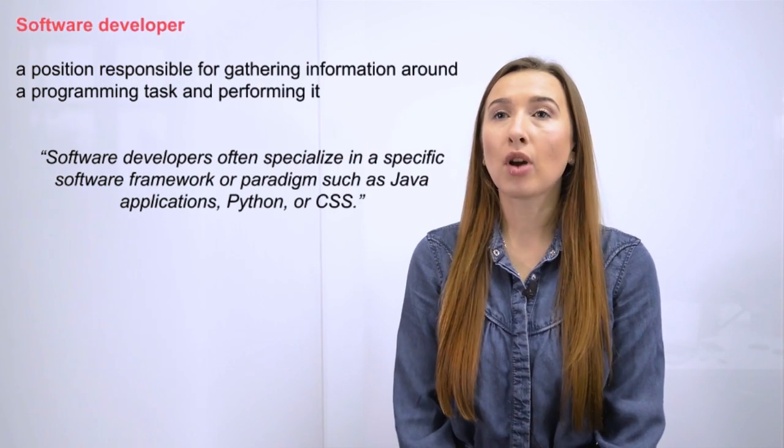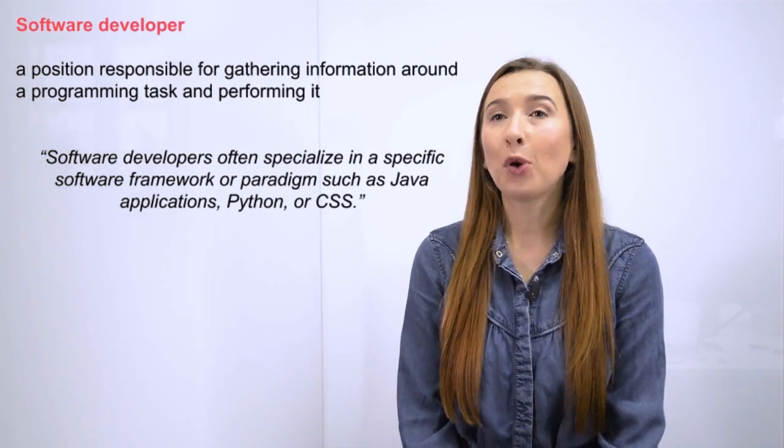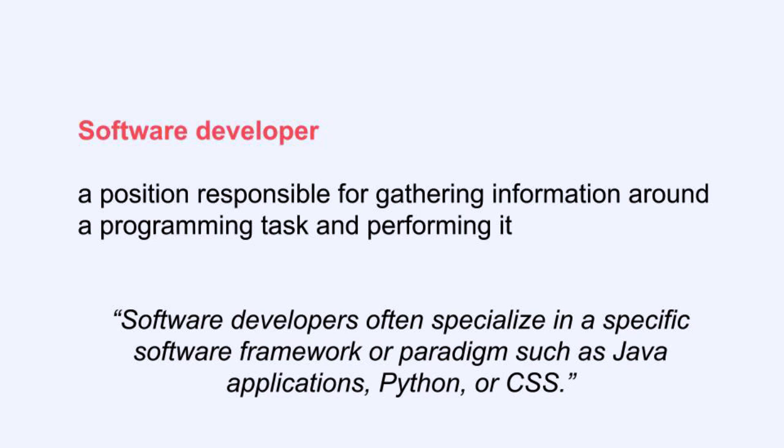A software developer is a position responsible for gathering information around a programming task and performing it. Let's take a look at the example. Software developers often specialize in a specific software framework, a paradigm such as Java applications, Python, or CSS. Be careful with your pronunciation: it's Python, it's CSS — you have to read the letters separately — and it's Java.